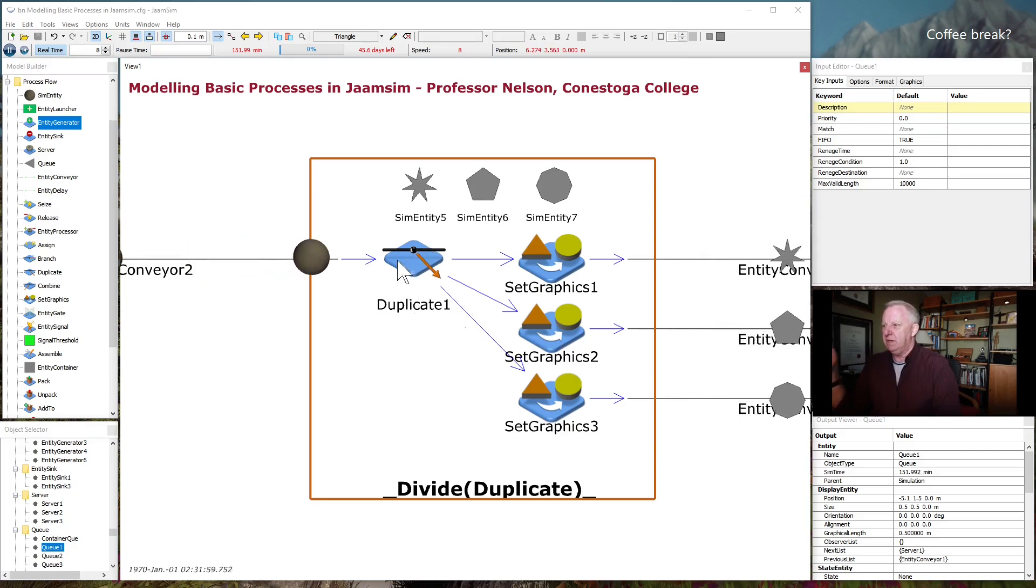One of the useful activities that you can do or processors that you can do is called a duplicate. And I think of it more as, in practical terms, as something that's going to divide the incoming entity into a number of entities and pass them out onto multiple channels. So this could represent all kinds of different things. You could have a piece of material, steel or wood, whatever, that's cut into pieces. And then, like a rod that's cut into, like bar stock that's cut into disks or blanks, or a piece of glass that's cut into smaller pieces to make mirrors or table components or something like that.